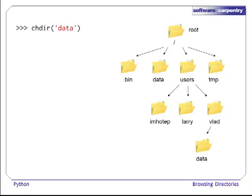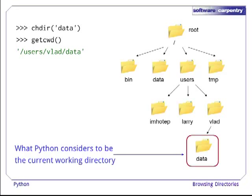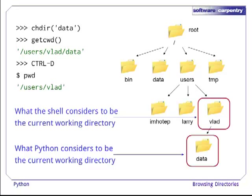When we call chdir in Python, it only changes the current working directory as known to Python. What the shell, within which we started Python, considers to be the current working directory, remains unchanged. For example, let us again change into the data directory. Using getcwd, we can see that, as far as Python is concerned, we are now in users vlad data. If we exit Python, using ctrl-d, and run the Linux pwd command, we see that, as far as the shell is concerned, we are still in users vlad, which is the directory in which we started Python.